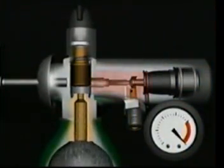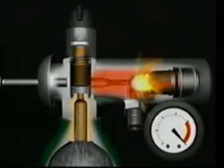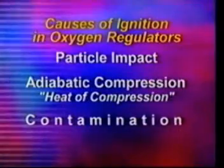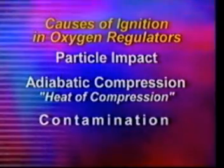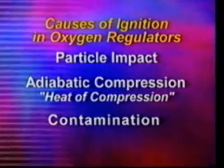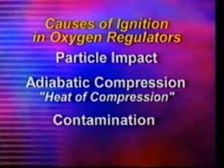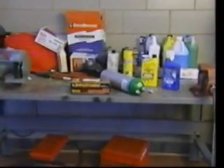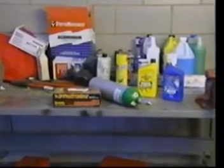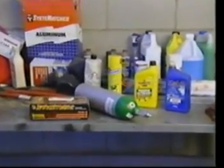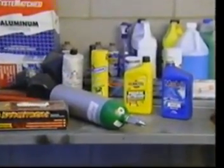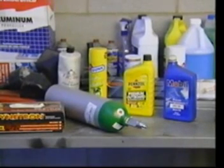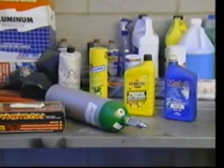That heat can also ignite contaminants inside the regulator, which brings me to my next point: contamination. This involves exposing parts of a regulator or a cylinder to a contaminant like grease or an oil-based lubricant — parts that come into contact with the high-pressure oxygen. Those contaminants are very easy to ignite, either by particle impact or adiabatic compression.